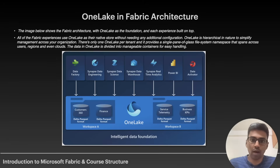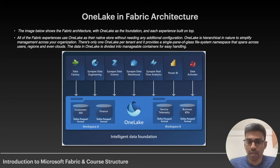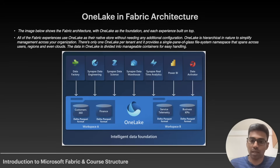There is only one OneLake per tenant, and it provides a single pane of glass file system namespace that spans across users, regions, and even clouds. The data in OneLake is divided into manageable containers for easy handling. You can think of it as a OneDrive for your organization. Understanding OneLake in Fabric architecture is very important — it is the foundational concept.